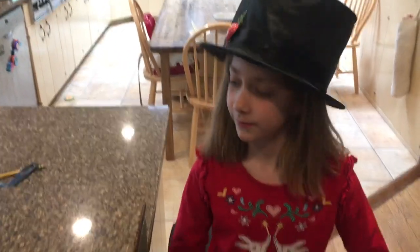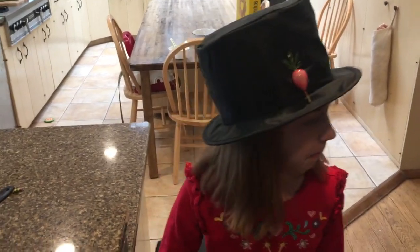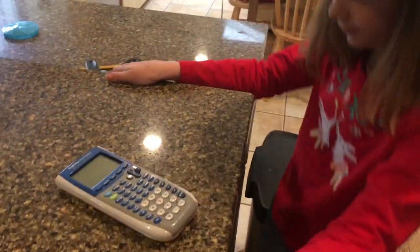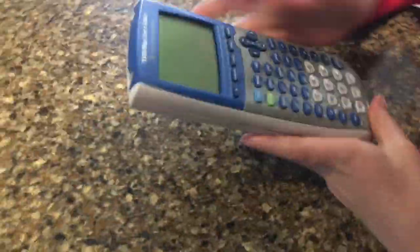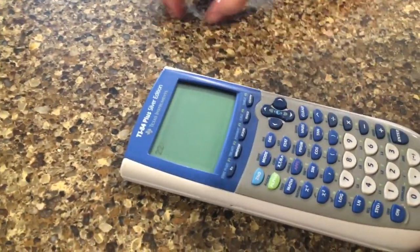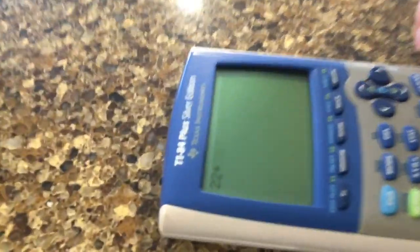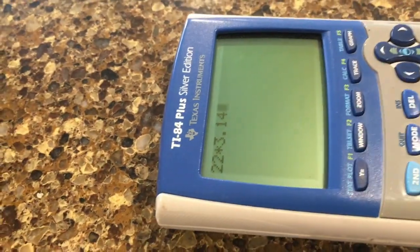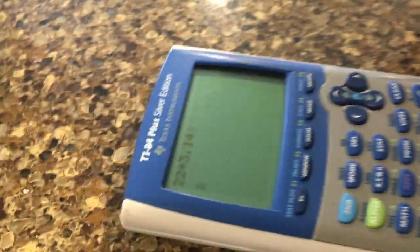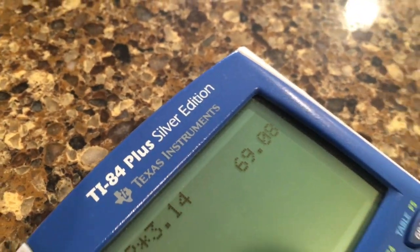Now we're inside and we're going to check our calculations to see if in fact the circumference of the wheel is 70 inches. Today we're going to do 22, that was our diameter, then you do times 3.14, which is approximately pi, and then press enter.